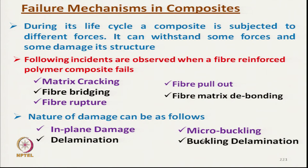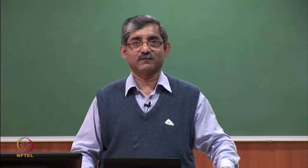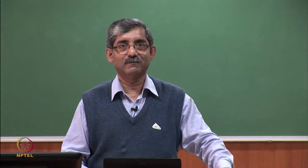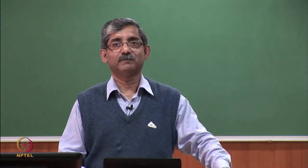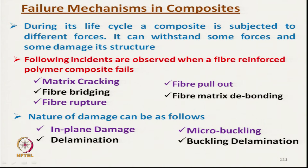The main issue in composites is that they are made of two entirely different components. It is not a homogeneous material — it is a heterogeneous material. So in-plane damage, micro buckling, delamination, and buckling delamination must be understood.